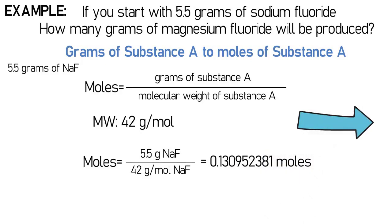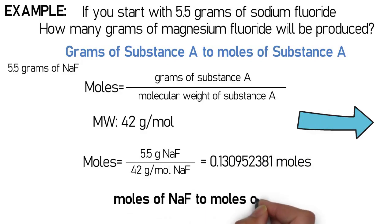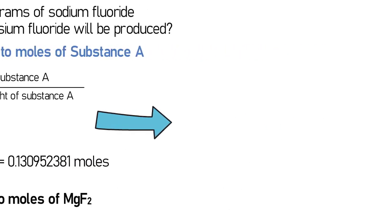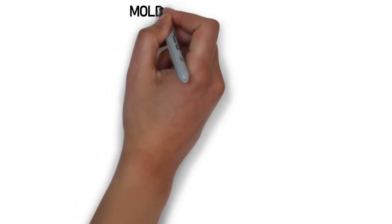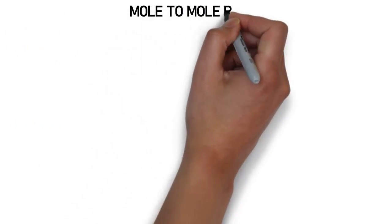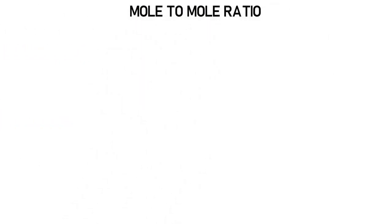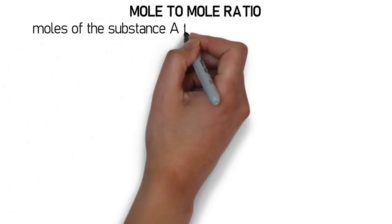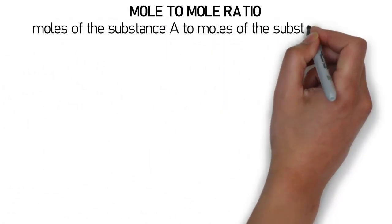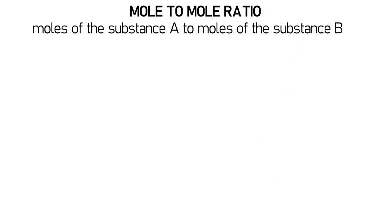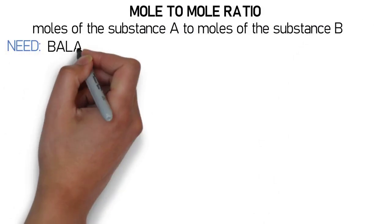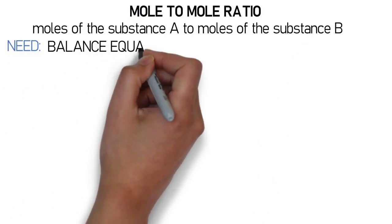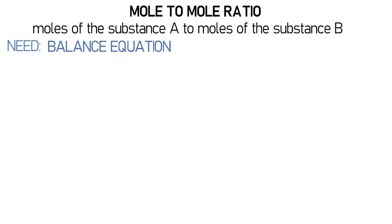Now on to step three, where I take my moles of sodium fluoride and convert to moles of magnesium fluoride. In this step we do a mole-to-mole ratio. I take the moles of the substance I know and convert it to moles of the substance I want to find the grams of. To do this I need the balanced equation from step one so I can have my conversion factor.